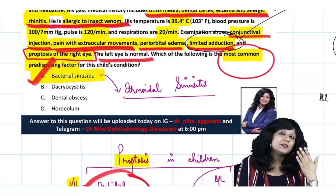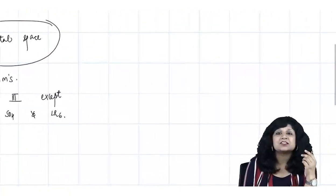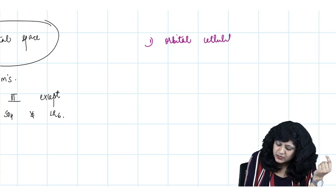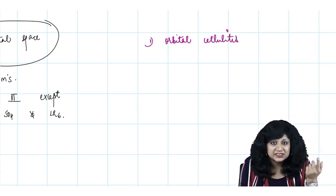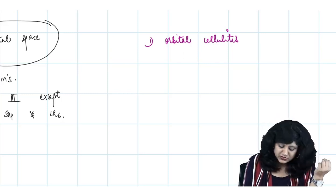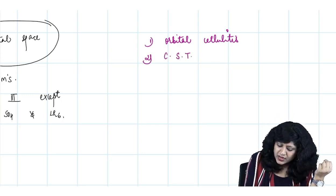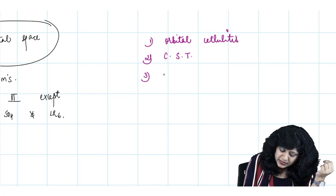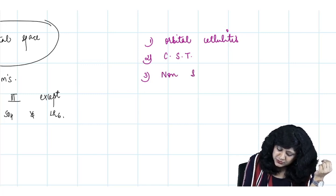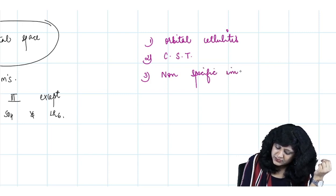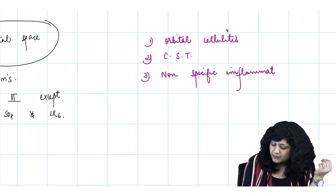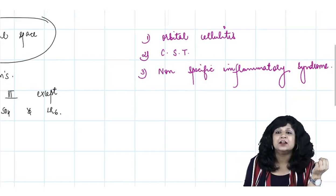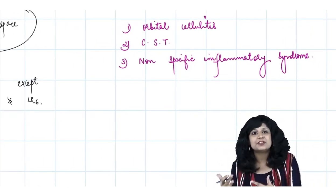If they ask what could be the differentials in this boy, there are certain things to think about. First is orbital cellulitis, which is the first consideration based on the presentation - unilateral proptosis and the risk factors. It can also progress to cavernous sinus thrombosis, so that is another differential. You can also think about non-specific inflammatory syndromes, which are characterized by inflammatory signs but where something else may actually be present. These three things need to be differentiated.